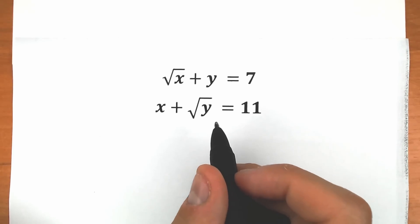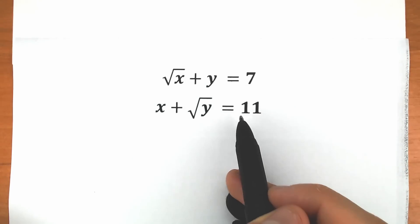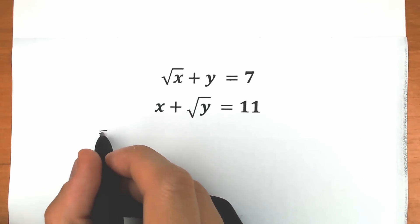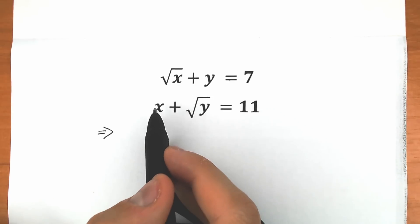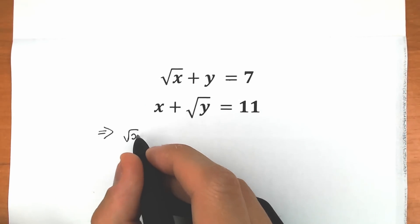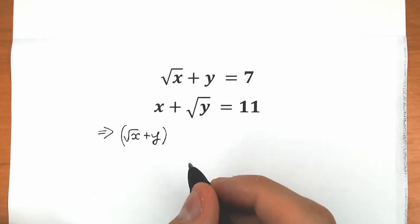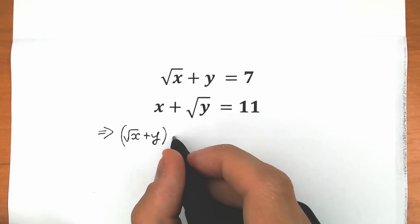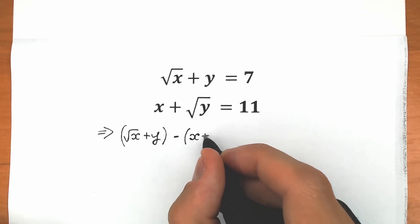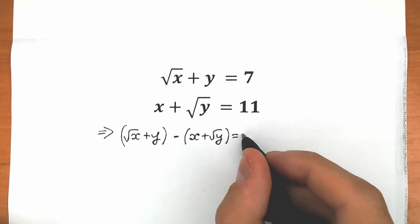So how can we do this? First of all, I suggest we subtract — let's subtract the second equation from the first. So our first step is to subtract equation two from equation one. We have square root of (x plus y) minus (x plus square root of y) equal to 7 minus 11.